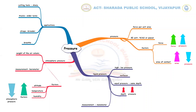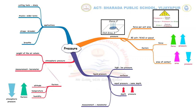Pressure can be defined as the force applied over a unit area. It is calculated using the equation: pressure is equal to force by area. The SI unit of pressure is Pascal, or Newton per meter square.